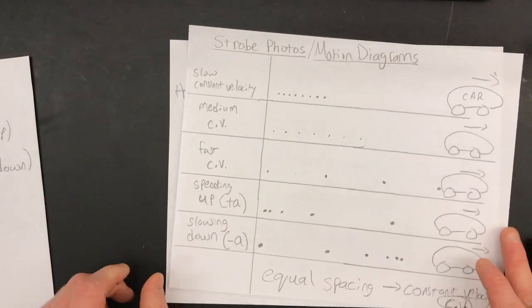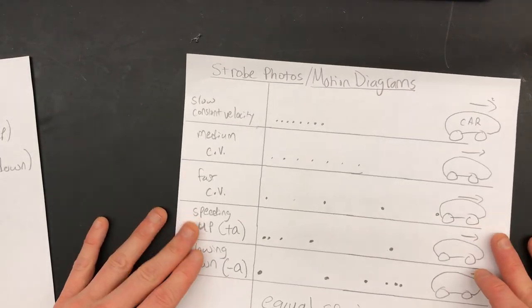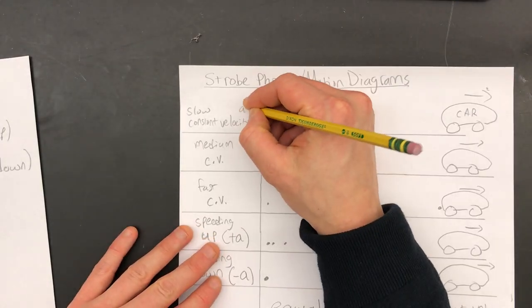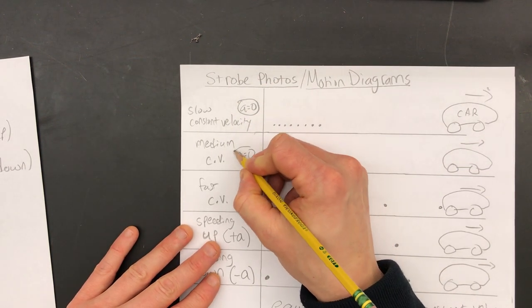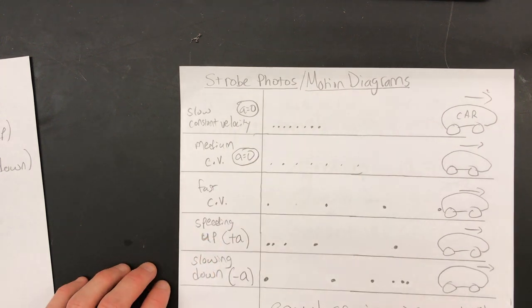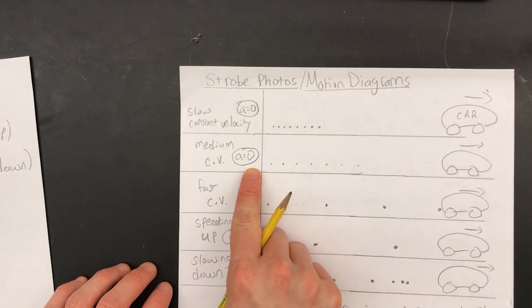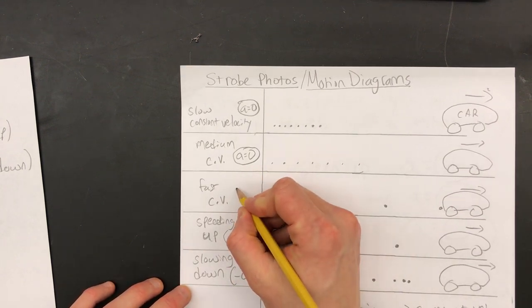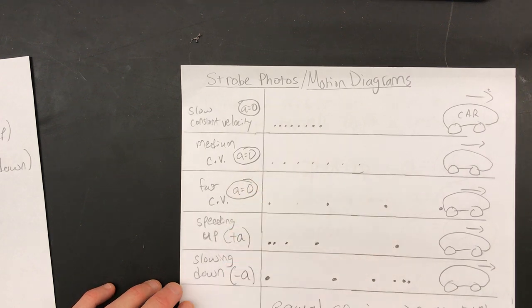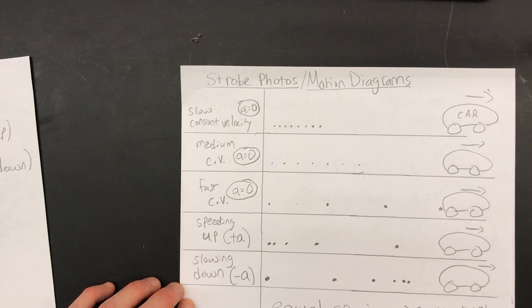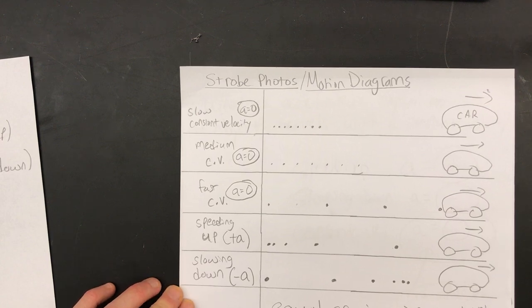Write that in. Do it right now on your chart here. A equals zero right there when there's a constant velocity. Even if you're going faster, but if your speed stays steady, as long as there's no increase or decrease in the speed, A is zero and the speed stays the same. Even if you're going 200 miles an hour in your car, as long as you stay at that same speed, you do not have an acceleration. You could go as fast as you want, but if your speed stays steady, A equals zero.